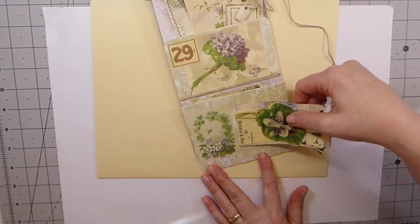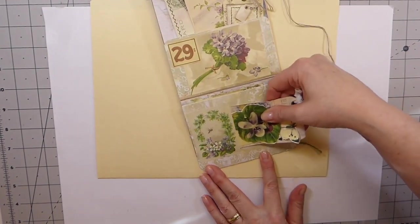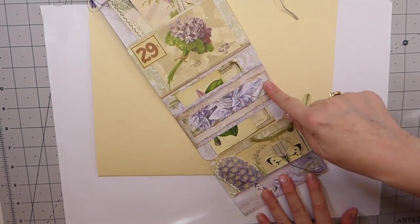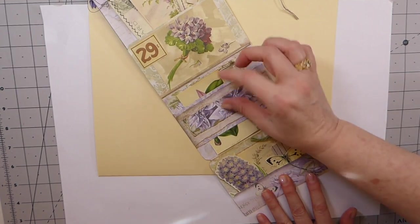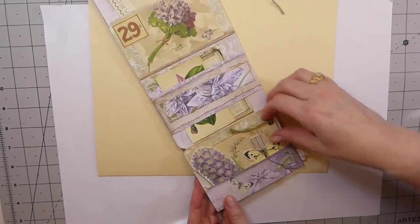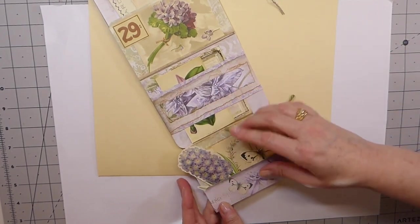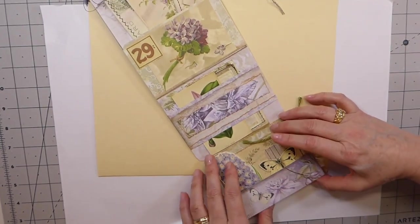And then we've got a side pocket here with a couple of journal cards. And then this flips down, I've made a belly band here so we've got another holding space. And then this is another little pocket.